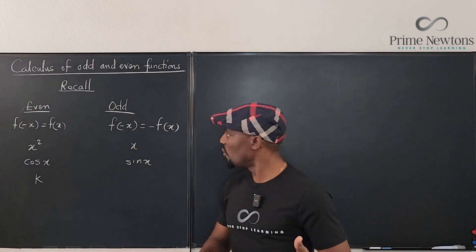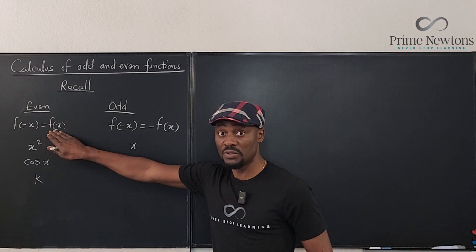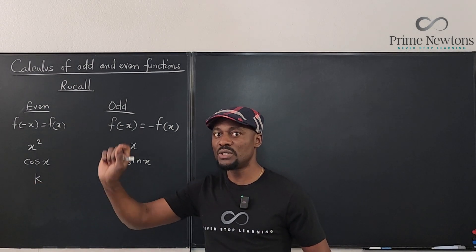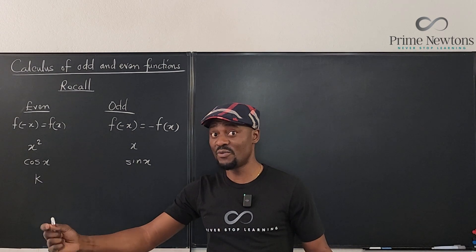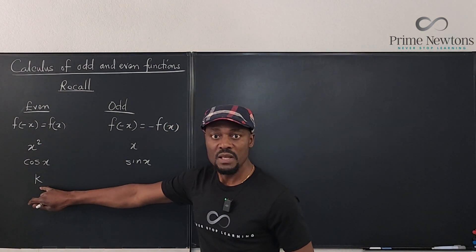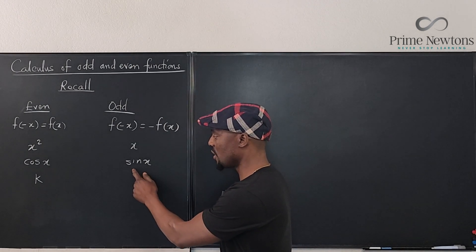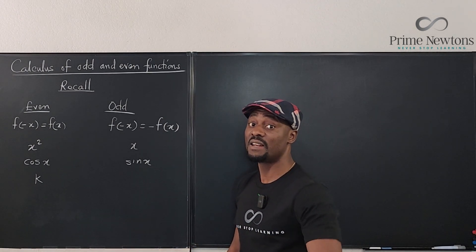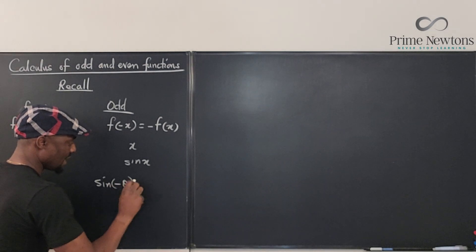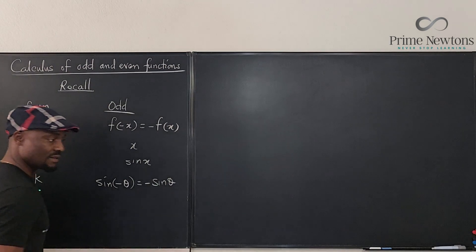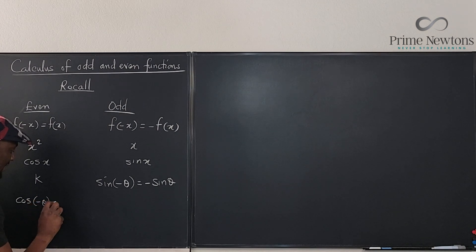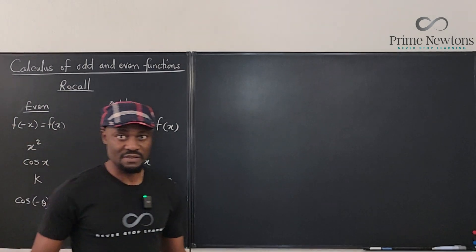Building on what we just looked at: a constant is like x to the power of zero, which is even. The implication for sine is that sine of negative theta equals negative sine theta — that's the meaning of being odd. And for being even, cosine of negative theta equals cosine theta. The graph can always give that away. Now, what happens when we multiply an even function by an odd function — would it be even or odd?